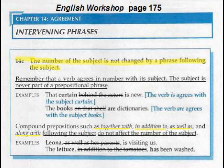Continue highlighting and underlining the next part of the introductory information. Compound prepositions such as 'together with,' 'in addition to,' 'as well as,' and 'along with' following the subject do not affect the number of the subject. For example: 'Leona, as well as her parents, is visiting us' — cross out 'as well as her parents' and you have 'Leona is visiting us.' Next: 'The lettuce, in addition to the tomatoes, has been washed' — cross out that phrase and you have 'the lettuce has been washed.'